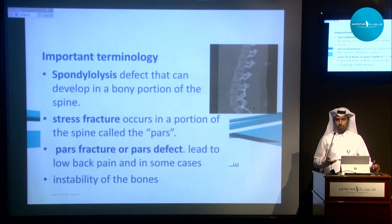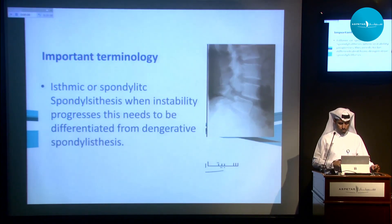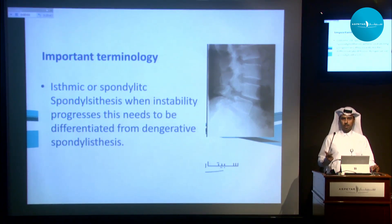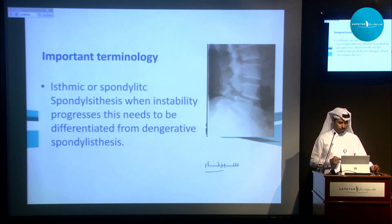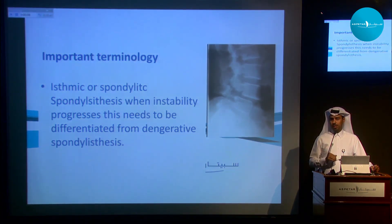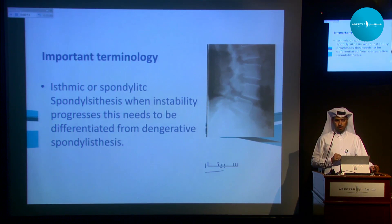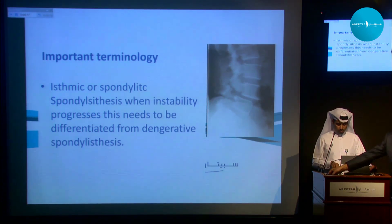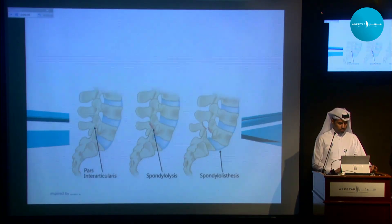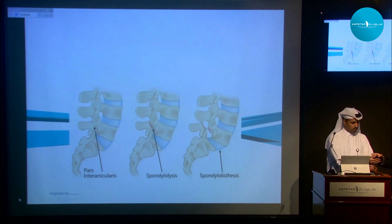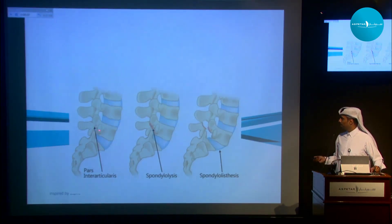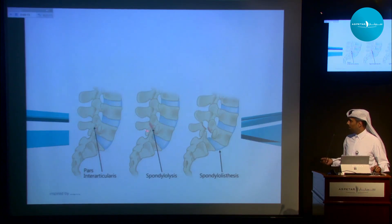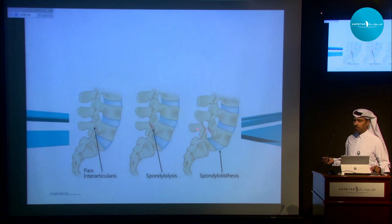The stress fracture can result in back pain, which can progress further to instability. When instability occurs, it is usually referred to as spondylolisthesis. It needs to be differentiated from degenerative spondylolisthesis, which usually happens in adults. When the stress fracture occurs it is spondylolysis — there is a lytic lesion — and when there is a slip it progresses to spondylolisthesis.